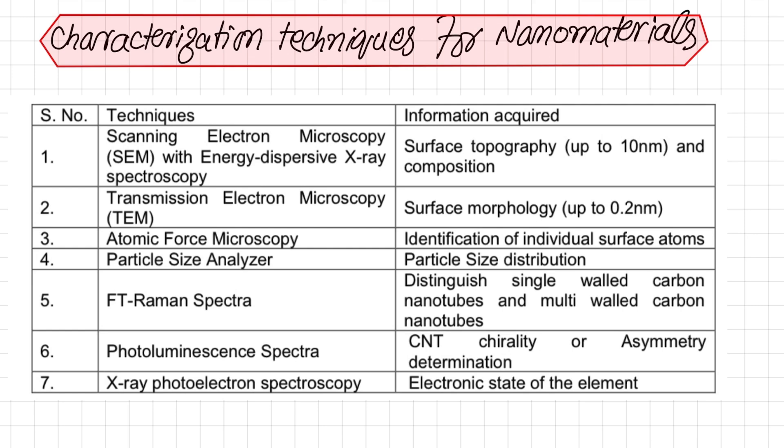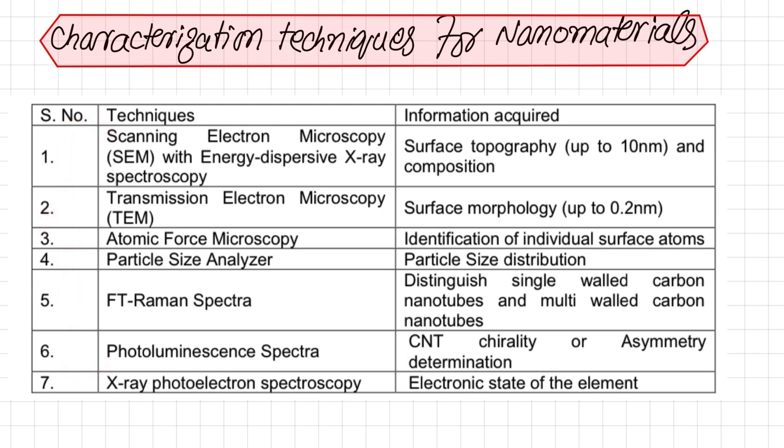Then there is photoluminescence spectroscopy, by which chirality or asymmetric determination is carried out. Finally, X-ray photoelectron spectroscopy gives information about the electron state of elements present on the surface of a nanomaterial. Using these characterization techniques, we get different types of information necessary to exploit the properties of nanomaterials.